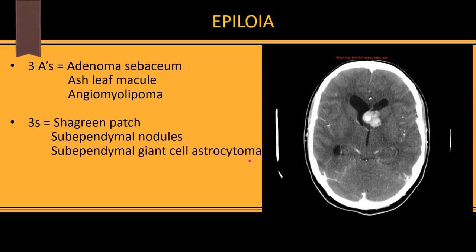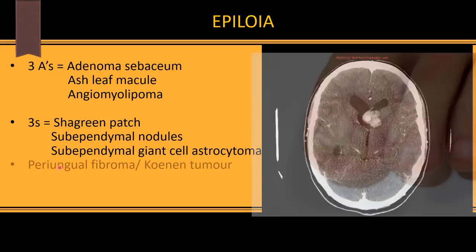If one of the sub-ependymal nodules enlarges, it forms a sub-ependymal giant cell astrocytoma (SEGA). The classical site is at the foramen of Monro. An enhancing lesion at the foramen of Monro in tuberous sclerosis is diagnostic of SEGA. The three S's are shagreen patch, sub-ependymal nodules, and SEGA.